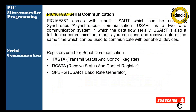PIC16F887 serial communication. The PIC16F887 comes with a built-in USART which can be used for synchronous and asynchronous serial communication. USART is a two-line communication system in which data flows serially. USART is also a full-duplex communication, meaning you can send and receive data at the same time, which can be used to communicate with peripheral devices.